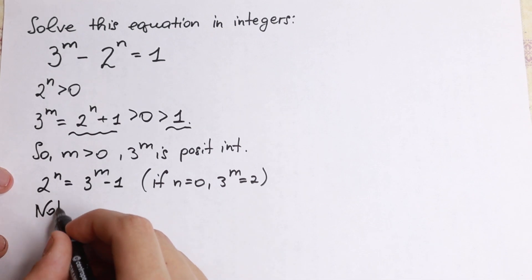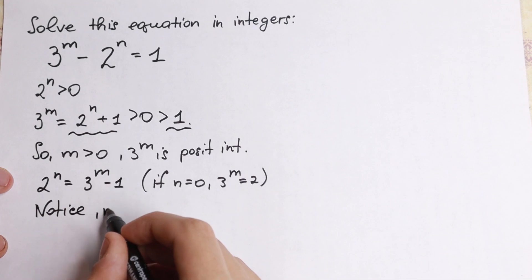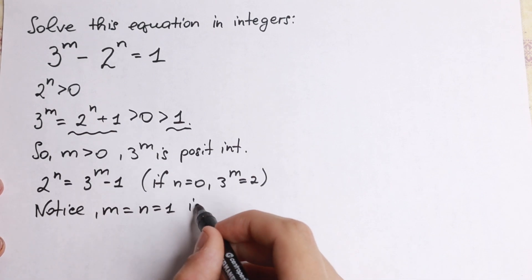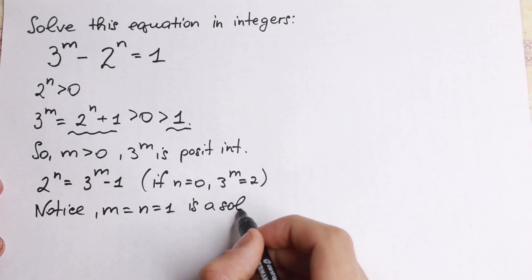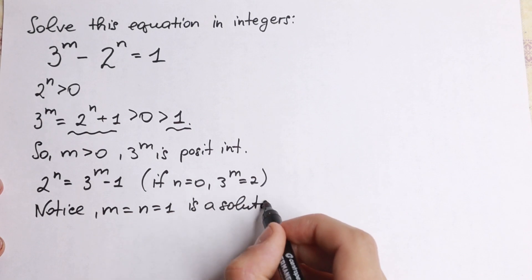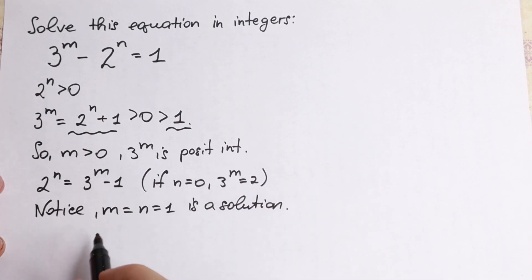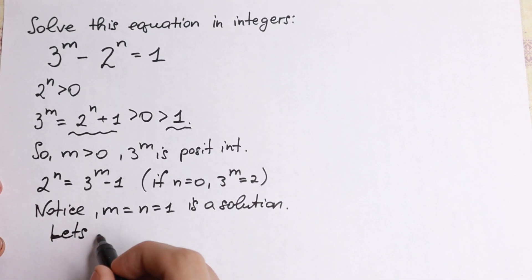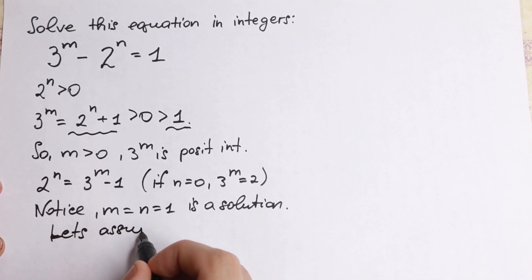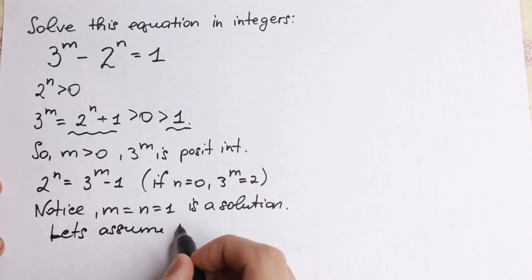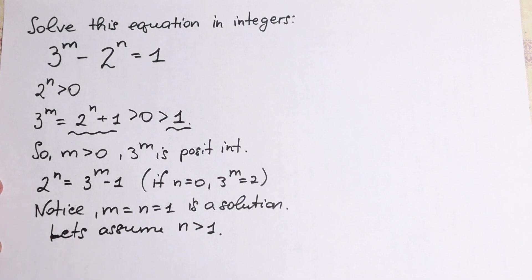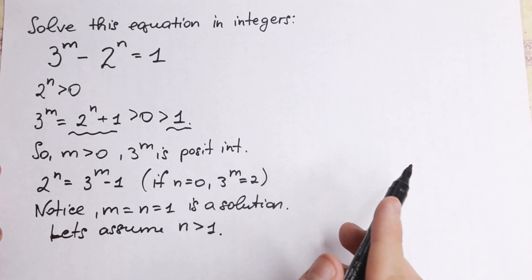Let's notice that m equal to 1 and n equal to 1 is a solution. So let's note this solution and then assume that n is greater than 1, because if n is equal to 1 we already have a solution. Let's assume n is greater than 1 and see what we will have.